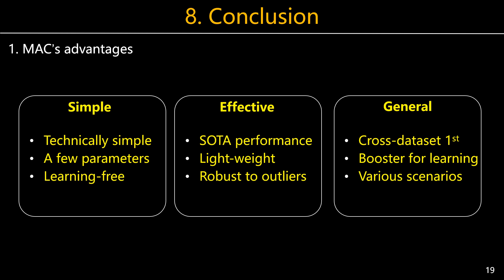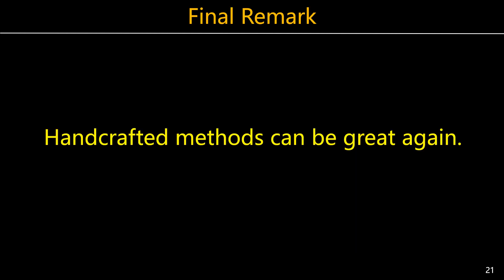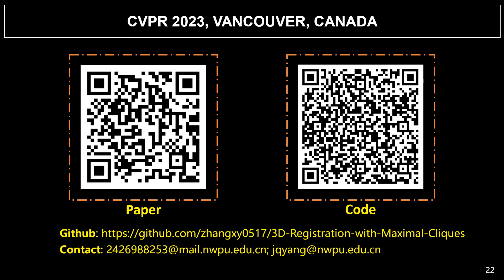To summarize, MAC is a technically very simple method with few parameters, but it achieves state-of-the-art performance on object, indoor scene, and outdoor scene datasets simultaneously. MAC has good generalization ability and can further boost deep-learned methods. In future work, we wish to develop a more trustworthy hypothesis evaluation technique, as MAC can generate high-quality hypotheses but may fail to select them currently. We want to claim that some well-crafted traditional methods can be great again, and they may deserve more attention even in the deep learning era. Here are the links to our paper and source code — please feel free to contact us. Thank you for listening.